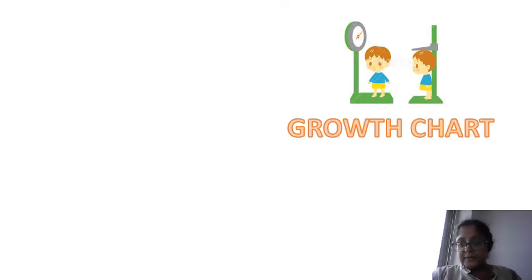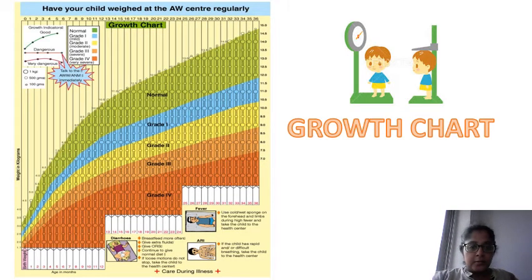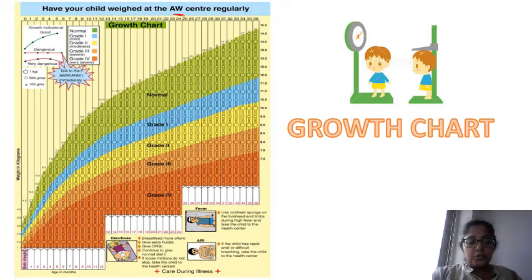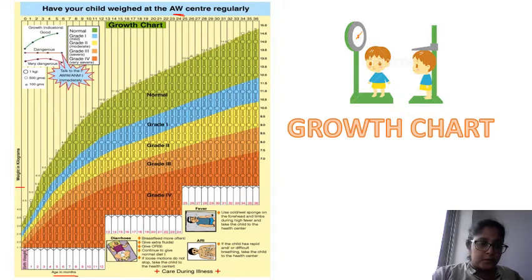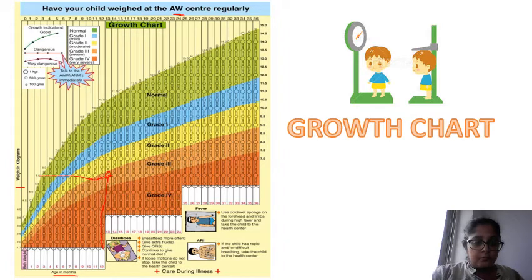Once you know the weight and height of the child, in ICDS or Anganwadi centers, we plot this on a growth chart. This is the Anganwadi growth chart where you plot weight in kg against age in months. Suppose a child is 12 months old and weighs 6 kg — you plot it and see it falls in the orange zone, which is grade 3. So a 12-month-old child weighing 6 kg has grade 3 malnutrition.